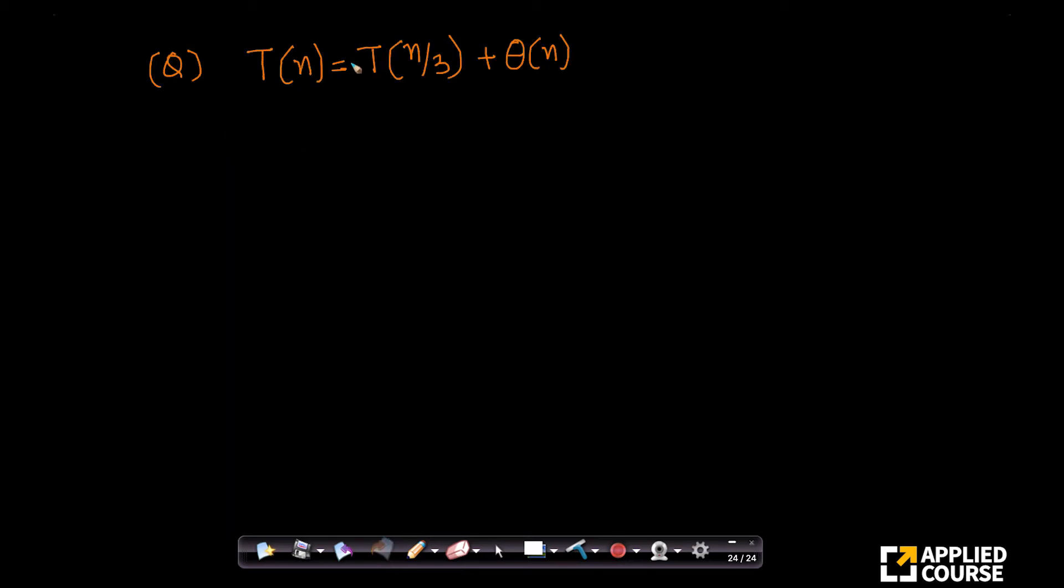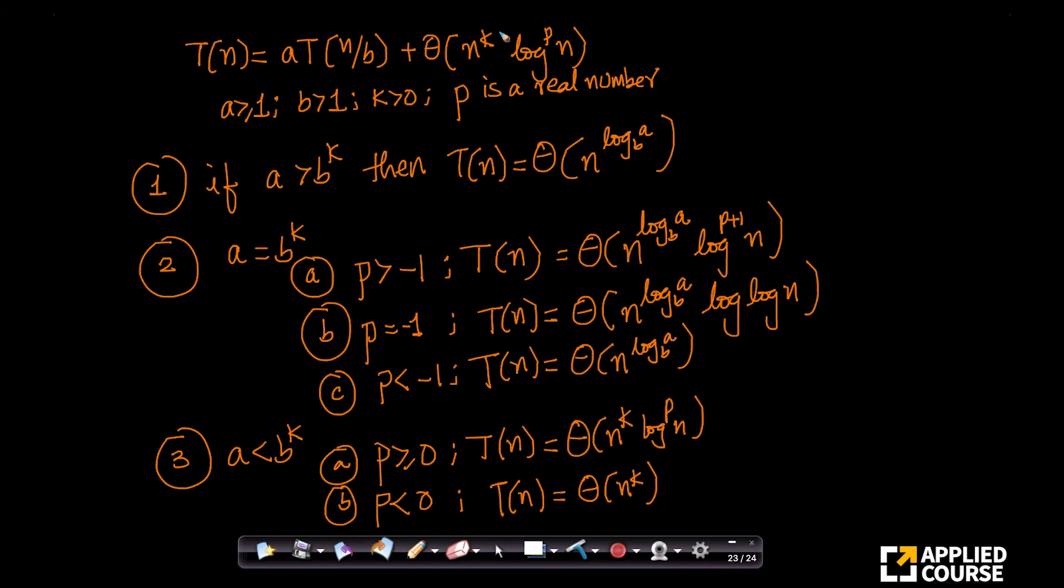What is it in form of? This is A. A equals 1. B equals 3. This is A, this is B. And what do we have here? Just theta of n.